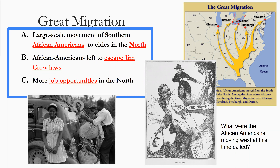In these years after the Civil War and into the early 1900s, we see what is called the Great Migration — a large-scale movement of African Americans leaving the South and going into cities in the North and Midwest: New York, Pittsburgh, Philadelphia, Detroit, Chicago. They were looking to escape Jim Crow laws, or at least places that didn't have as severe ones, and looking for better job opportunities in all the factories popping up in the North.